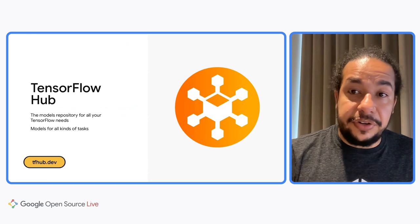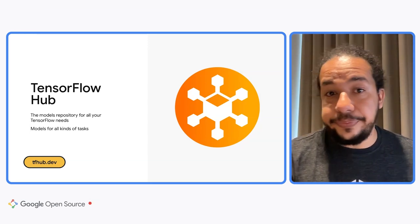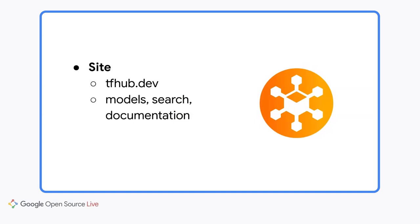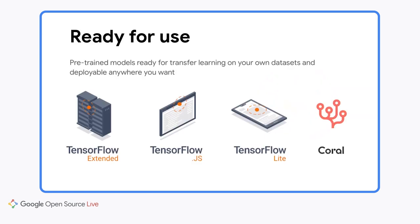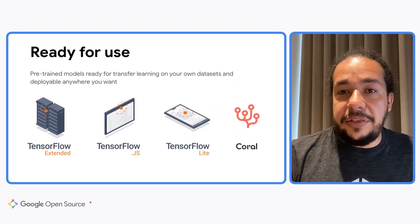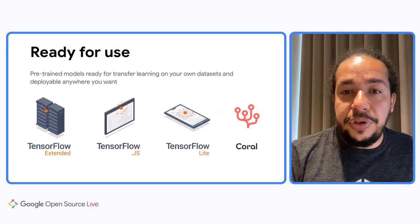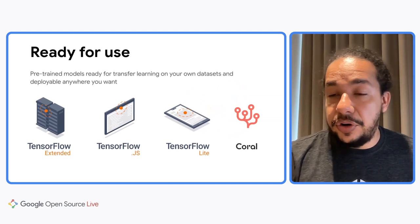On TensorFlow Hub, you can find thousands of TensorFlow models and try them right in your browser. You can find models for all kinds of tasks like image, text, audio, and video. TF Hub is composed of two components: the website, tfhub.dev, where you can search for models and read their documentation; and a library. With one line of code, models can be pulled into TensorFlow for retraining with your own data, whether you are using a high-level tf.keras API or a low-level API.